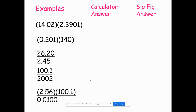So let's take a look at some examples. We have a multiplication, we do that, and this is what you get on the calculator. You've seen this before where you get all these numbers on a calculator and you say, where do you round? We have to be able to count significant figures in order to figure that out.